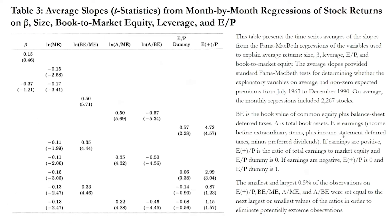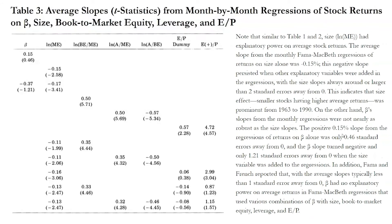Table 3 presents time-series averages of slopes from Fama-Macbeth regressions used to explain average returns. The factors are size, beta, leverage, earnings over price, and book-to-market equity. The monthly regressions included 2,267 stocks on average. Size had explanatory power: the average slope from regressions of returns on size alone was negative 0.15%, and this negative slope persisted when other variables were added, with size slopes always around or larger than 2 standard errors from zero, indicating a prominent size effect from 1963 to 1990.